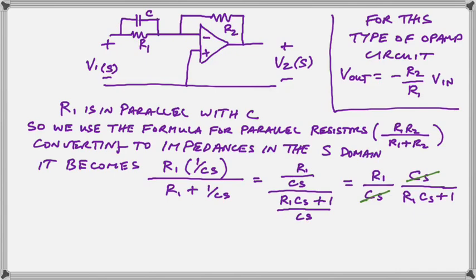As you can see, similar to what we did with the transfer function, we cancel out the CS, and our impedance of C in parallel with R1 is R1 over R1 times CS plus 1. So now all we have to do is to put that into the denominator of our normal op-amp equation.